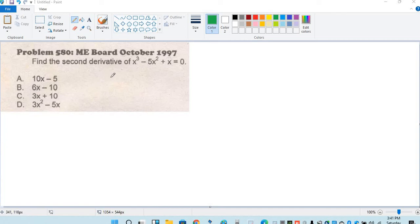Next problem. Find the second derivative of the equation x cubed minus 5x squared plus x is equal to 0.